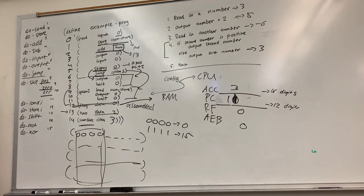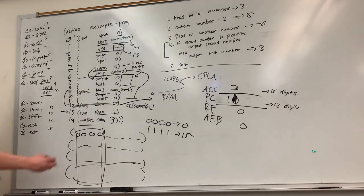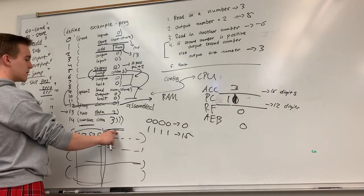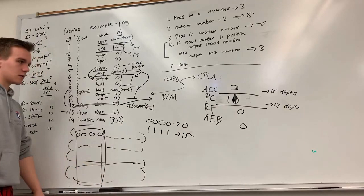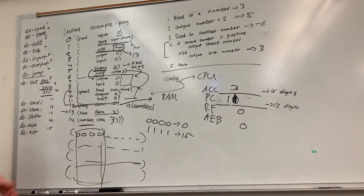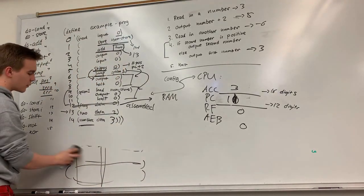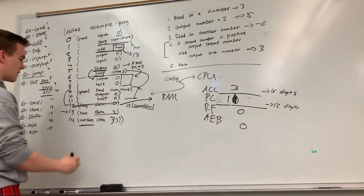Do load I and store I are similar to load and store, except they're indirect — that I stands for indirect. So they take an address of an address to load from. I don't have an example in my program here, but I can put a data line down here and show how load I and store I are functional. The main usage for these is kind of in a pointer sort of fashion, so I can store a whole bunch of numbers without knowing how many numbers they're going to pass me.